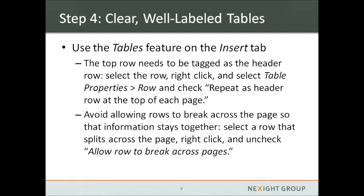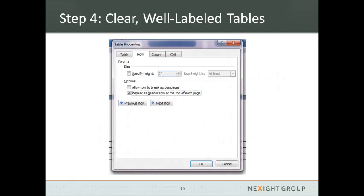Step four is to create clear, well-labeled tables. Using the tables feature on the Insert tab will automatically insert the correct table. The top row needs to be tagged as the header row — that is the first row the screen reader will read, and it also repeats if the table breaks across pages so you continue to understand what each column is labeled. You also want to avoid allowing rows to break across pages so information in one row stays together. Right-click the table and select Table Properties to see dialog boxes to either allow or disallow rows breaking across pages, and to designate the header row.